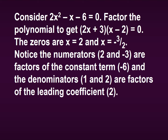Notice that the numerators 2 and negative 3 are factors of the constant term, which is negative 6. And notice that the denominators 1 (since 2 over 1 is still 2) and 2 are factors of the leading coefficient, 2. That is not a coincidence.